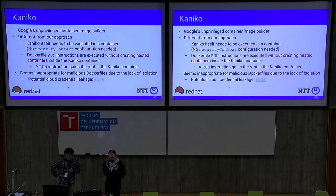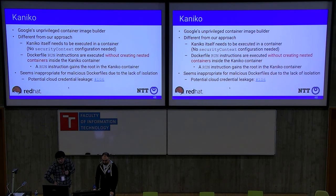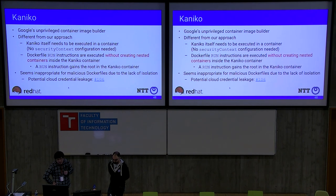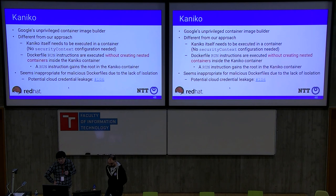Google released Kaniko last year, which is a container image builder that is different from our approach: Kaniko itself needs to be executed in a container, and Dockerfile RUN instructions execute without creating nested containers inside the Kaniko container, so the RUN instruction gains root in the Kaniko container. We consider this inappropriate for malicious Dockerfiles because of the lack of isolation. Uber also recently released Makisu, which is very similar to Kaniko with regard to unprivileged execution.